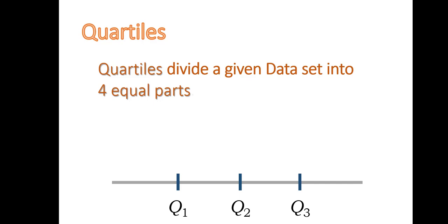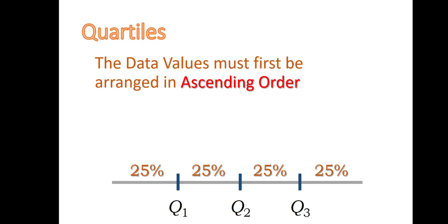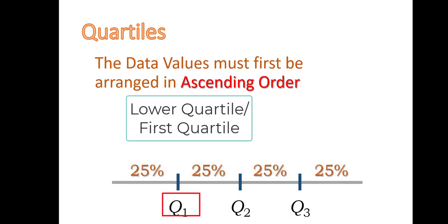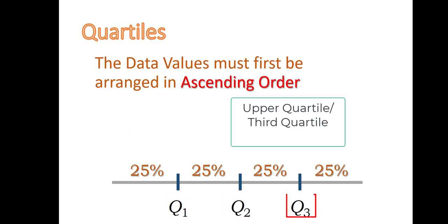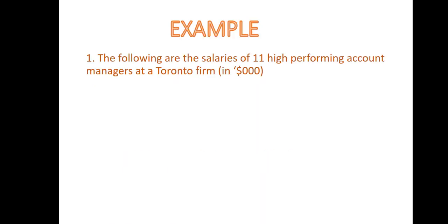Looking at quartiles — dividing our data into four equal parts — we have approximately 25 percent in each area. The data must be arranged in ascending order first. Q1 has approximately 25 percent of the data below it and 75 percent above it; Q1 is called the lower or first quartile. Q2 is the middle or second quartile, and Q3 is the upper or third quartile.